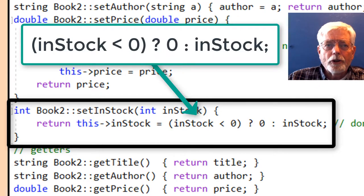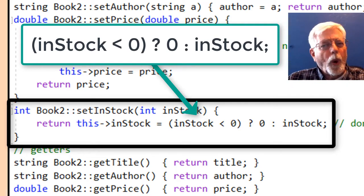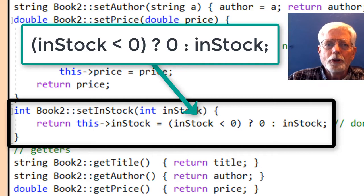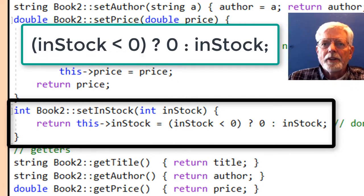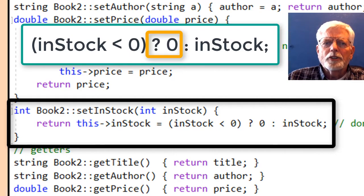The conditional operator is used in the setInStock to do the same thing. The conditional operator was described way in the beginning of the course and hasn't seen much use. I want to review it here since it is cool and you may see it used by other programmers and no longer wonder what it means. The test condition checks to see if it is less than 0. If the value after the question mark is used,